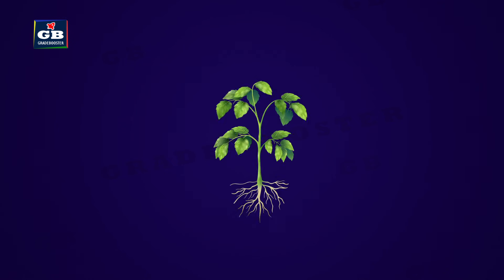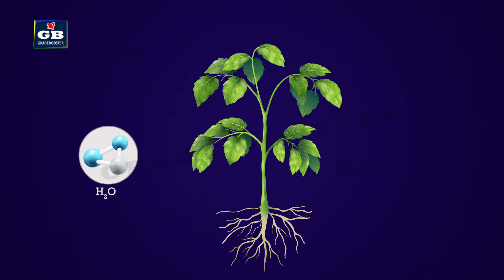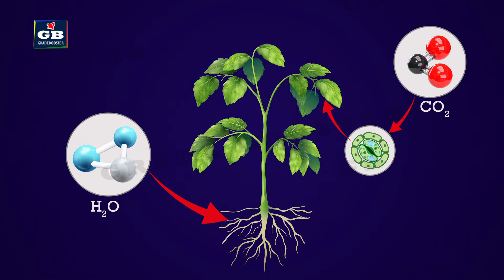Plants absorb water by their roots, and they get carbon dioxide through the stomata present on the underside of the leaf. They harvest sunlight by the surface of their leaves.